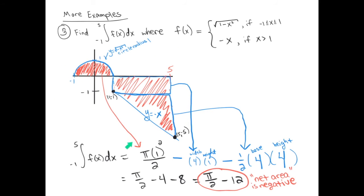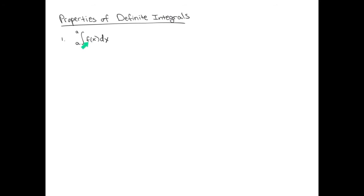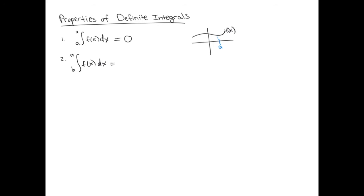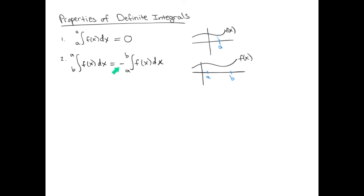Now let's talk about additional properties of definite integrals. The first property: a definite integral from a to a equals 0 — essentially a sliver with no width has area 0. The second property: the integral from b to a equals the negative of the integral from a to b. The integral on the left counts the x-axis in the negative direction from b to a, while the integral on the right counts it in the positive direction, so they differ by a minus sign.